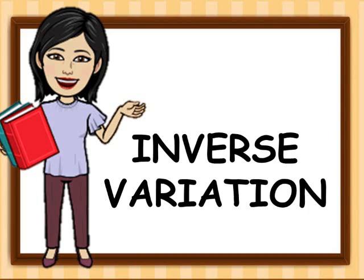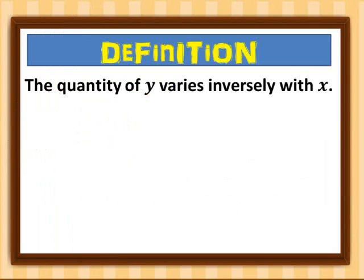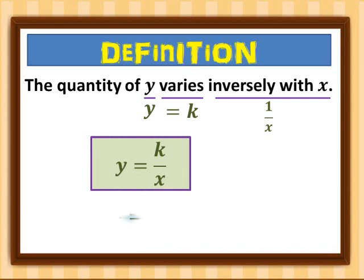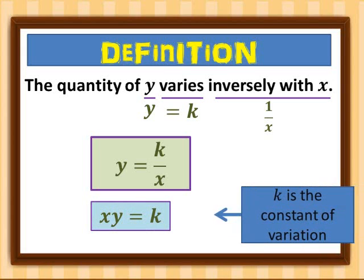This morning we will be talking about inverse variation. The quantity y varies inversely with x, that's 1 over x. Combining them, y is equal to k over x, or x times y is equal to k, where k is the constant of variation.